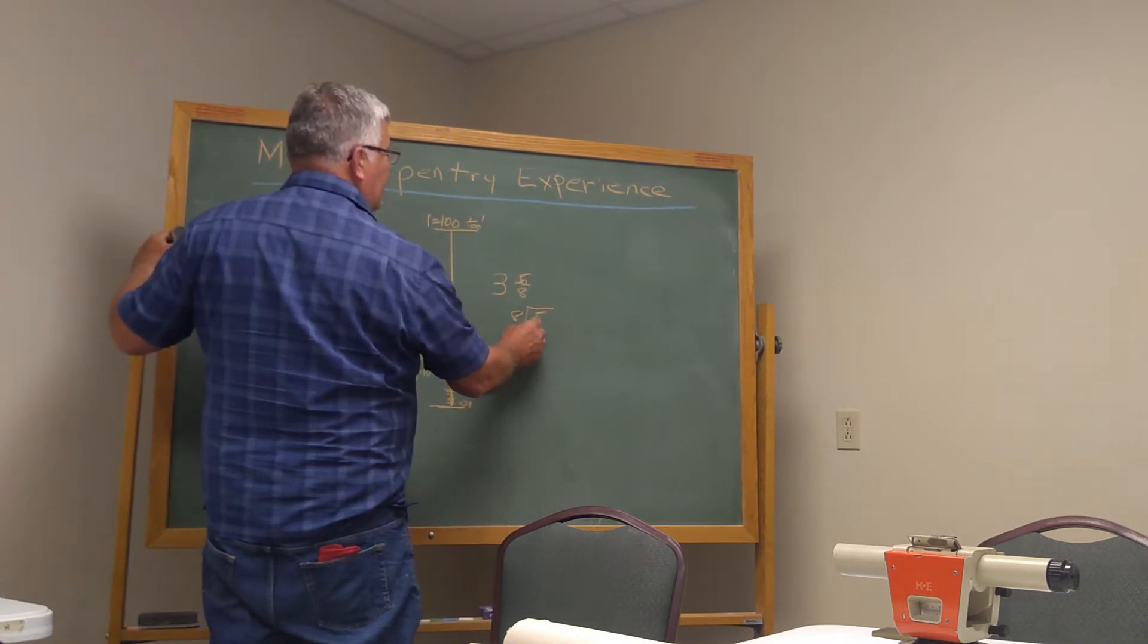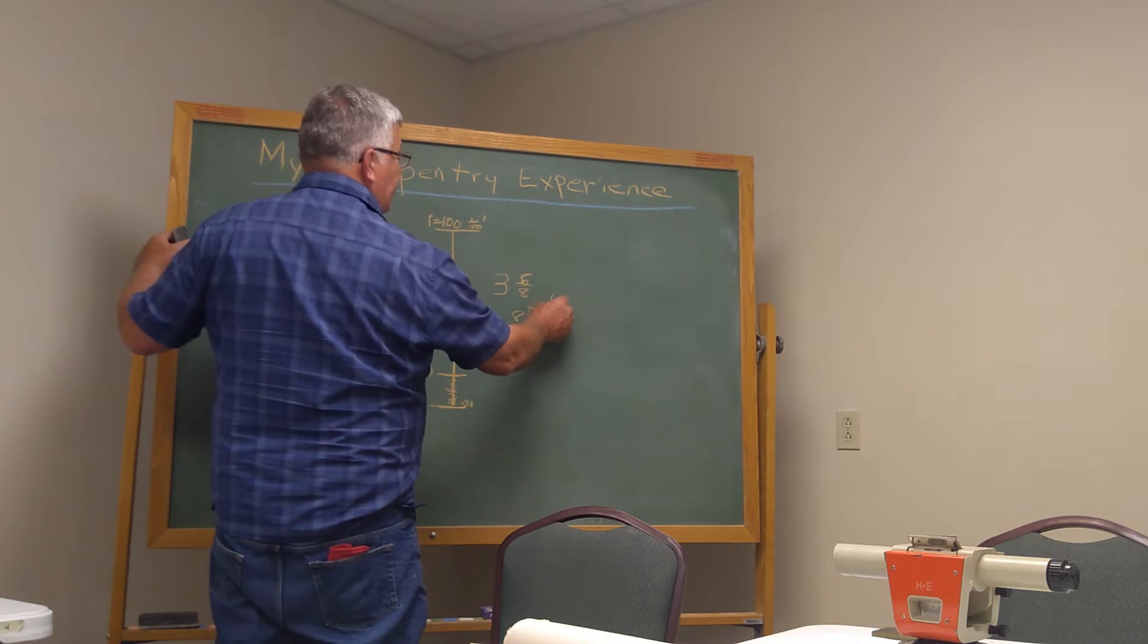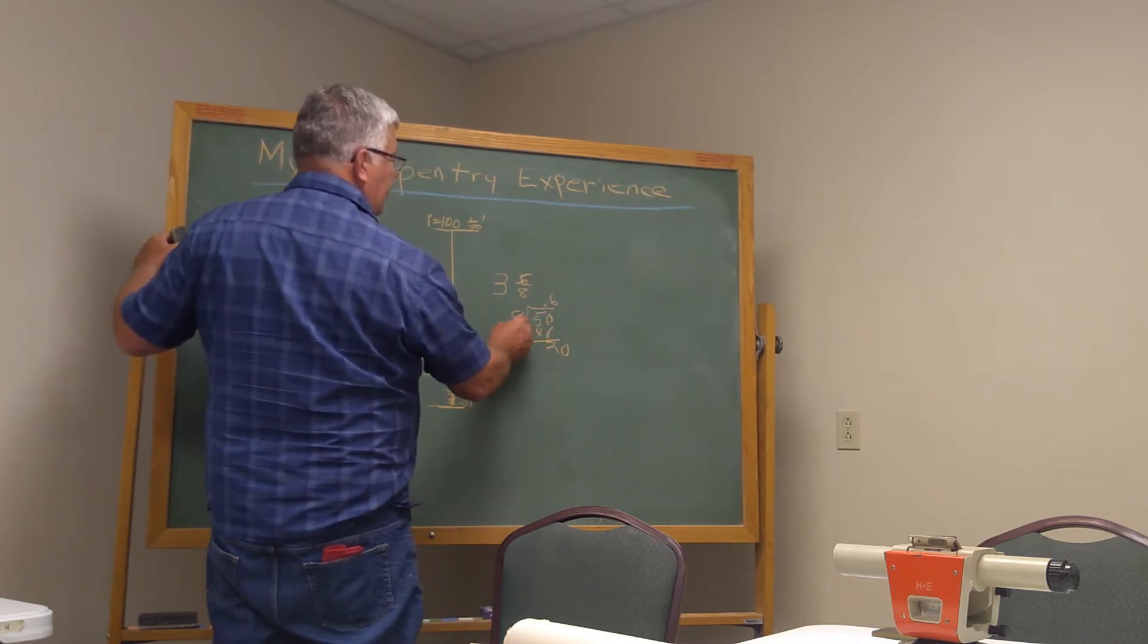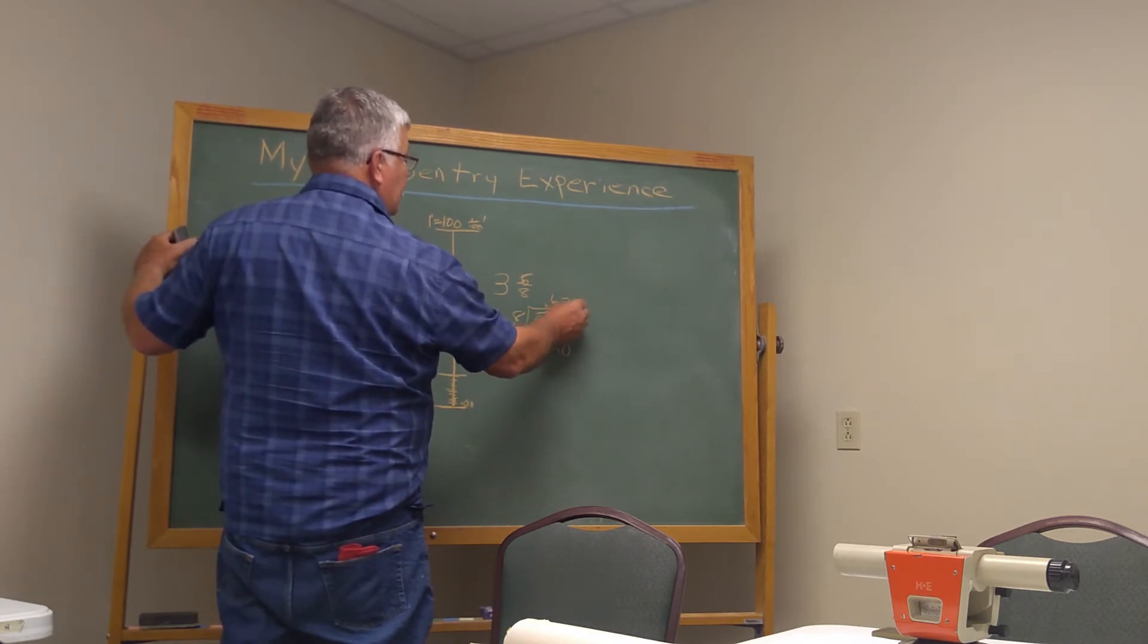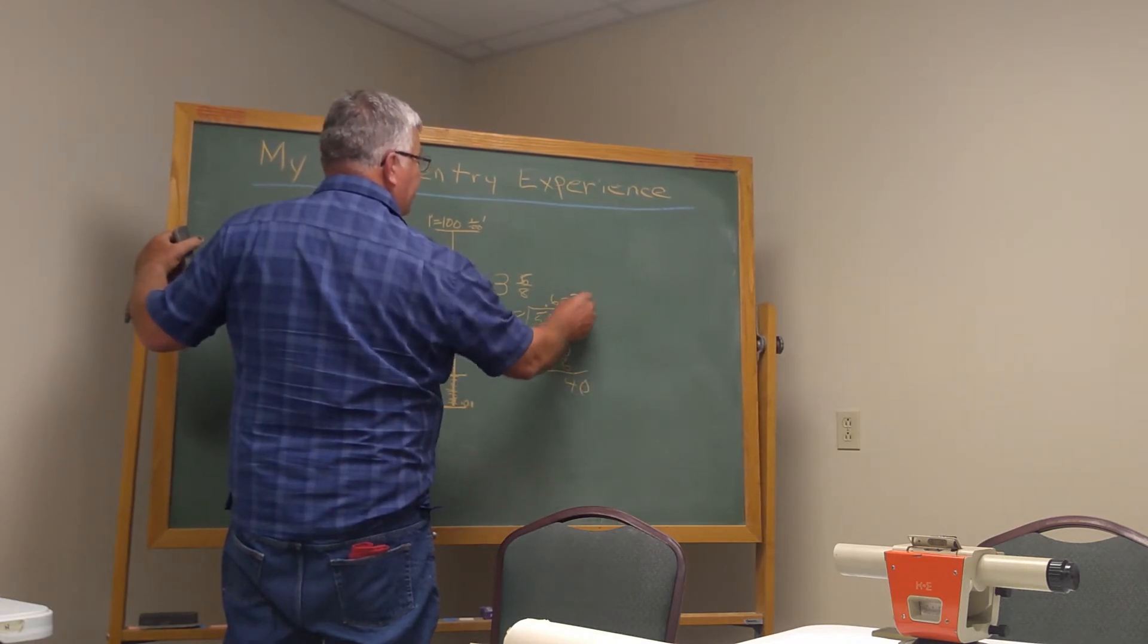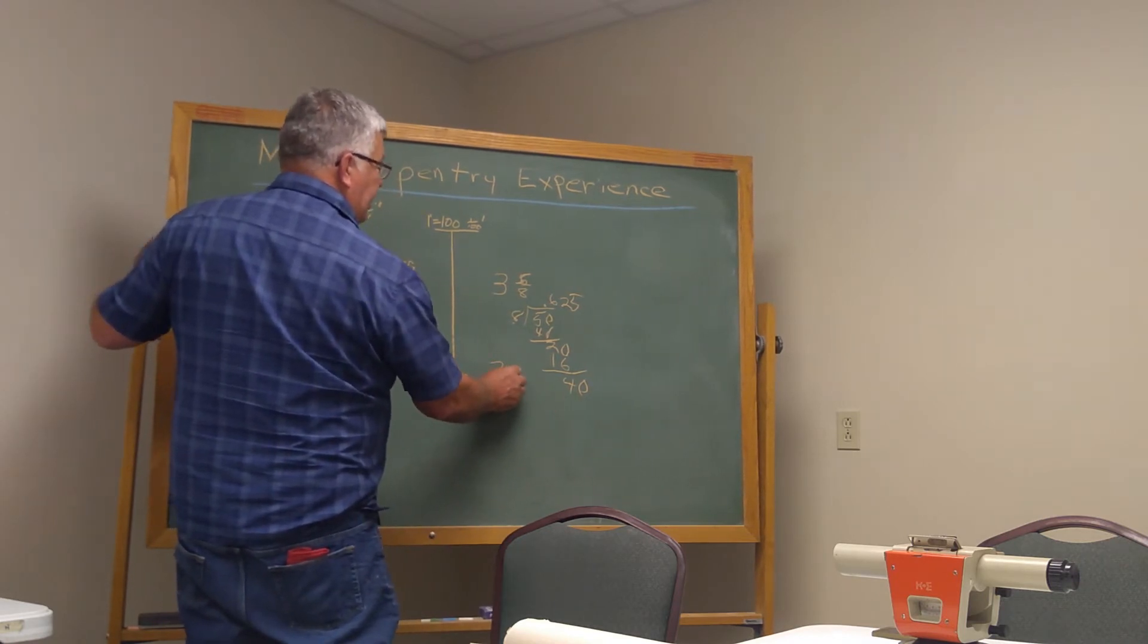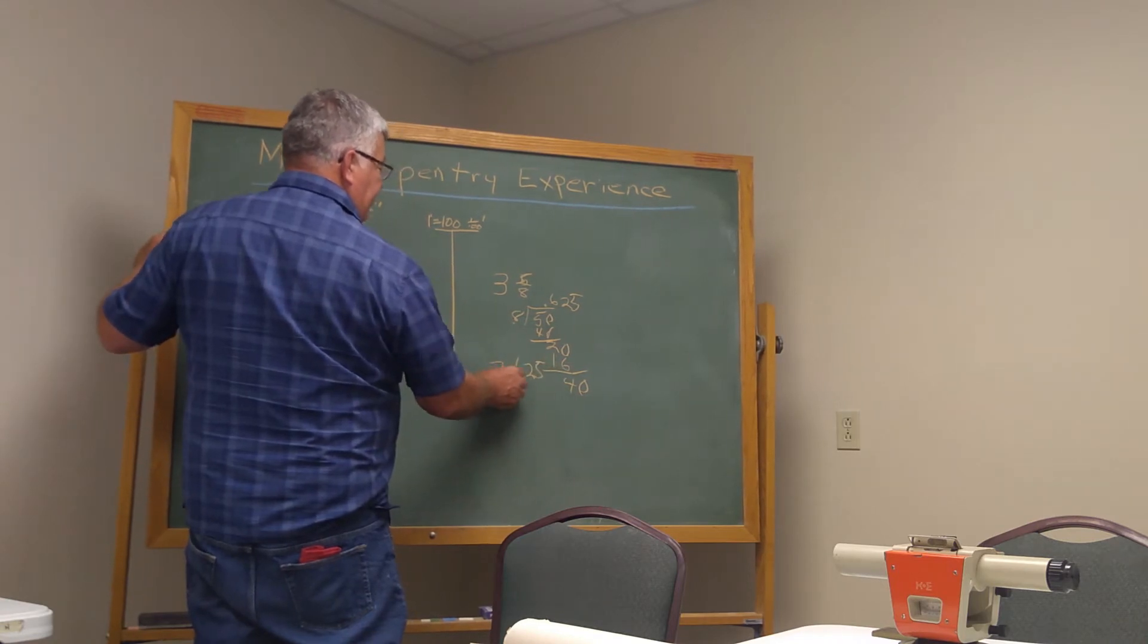So, eight into five, eight into five would be point two eight, let's see, six-eighths are point four eight. Eight into that would be two. Two times eight is point one six. Point six two five.